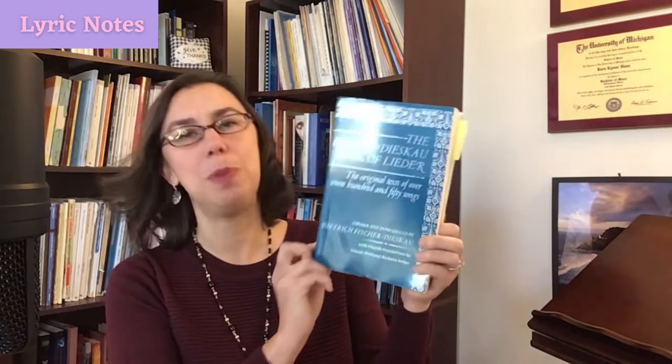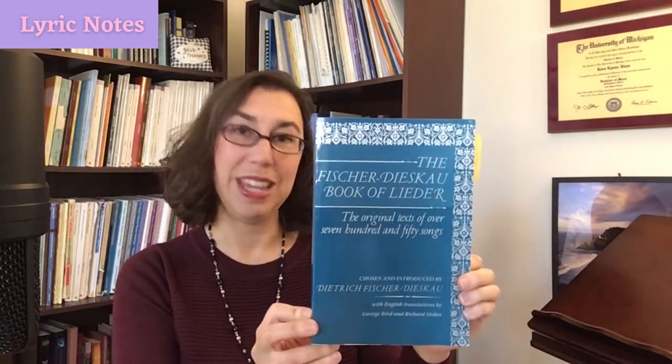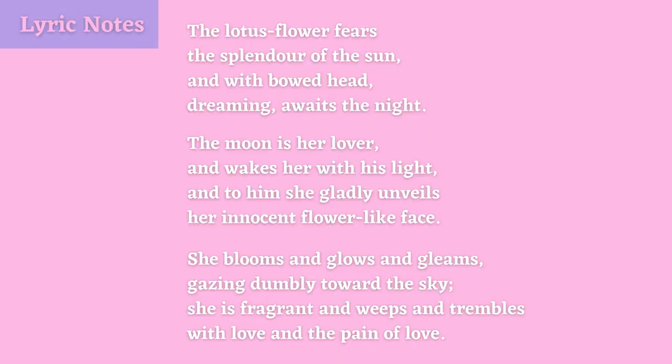And now the English translation as provided by George Byrd and Richard Stokes in the Fischer-Dieskau Book of Lieder: The lotus flower fears the splendor of the sun and with bowed head, dreaming awaits the night. The moon is her lover and wakes her with his light, and to him she gladly unveils her innocent flower-like face. She blooms and glows and gleams, gazing dumbly towards the sky. She is fragrant and weeps and trembles with love and the pain of love.